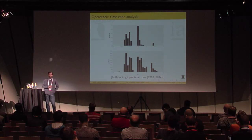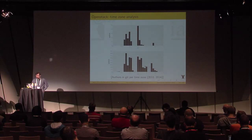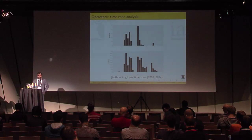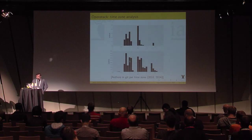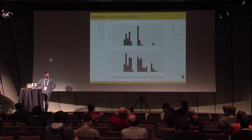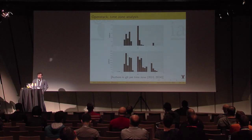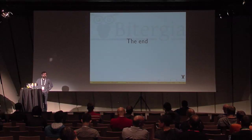Just to finish the OpenStack-specific analysis, this is the time zone evolution for OpenStack, comparing 2010 and earlier with 2014. You can see how the early period was mostly a US thing with some European contributions. Right now it's much more diverse — Asia has entered, Europe has a higher share especially Eastern Europe and Russia, and the distribution within the US has also shifted, with more development on the west coast.